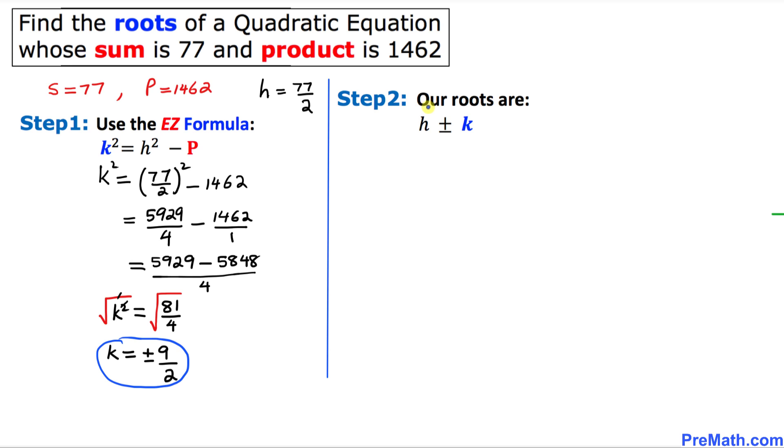And here is our final step. Our roots are then going to be H plus minus K. In our case, H is 77 divided by 2. Let's write them down: 77 divided by 2 plus or minus K is 9 divided by 2, and that is our answer.